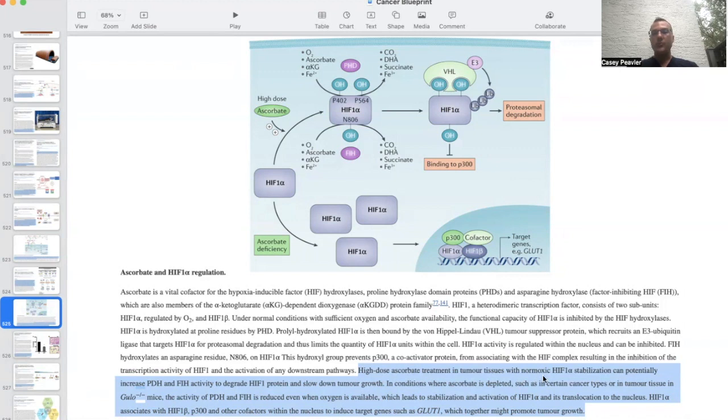it's able to disrupt the normoxic HIF-1 alpha stabilization, can potentially increase PDH and FIH activity to degrade HIF-1 protein and slow down tumor growth. In conditions where ascorbate is depleted, such as in certain cancer types or tumor tissue in gulo-negative mice, the activity of PDH and FIH is reduced even when oxygen is available, which is saying that it's going to be upregulating HIF-alpha even if oxygen is present under a non-cancer condition.